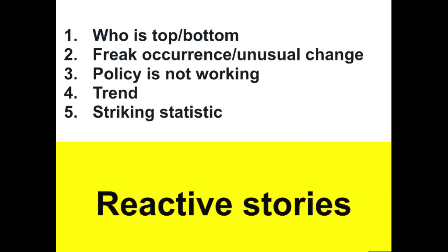That's what data journalism is — working with structured data. There's a lot of data around, which is one of the reasons this is increasingly in demand. But I want to start with the stories. A lot of people start with 'let's work with a spreadsheet,' but we need a reason to work with a spreadsheet. Broadly speaking, there are two types of stories: reactive stories and proactive stories.